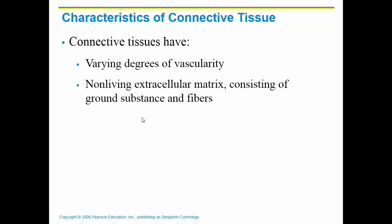Every single connective tissue has something called an extracellular matrix. With epithelial tissue, they were mostly made up of cells — one of their characteristics was cellularity. In connective tissue, there are cells, but then there's also this non-living, background portion called matrix.